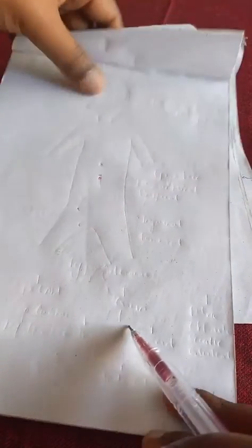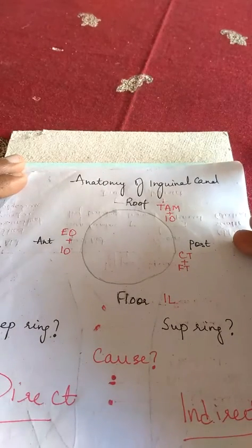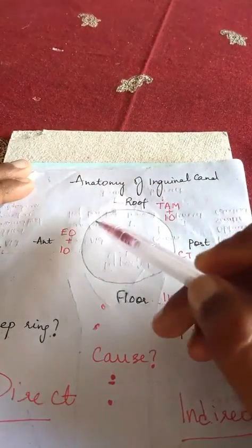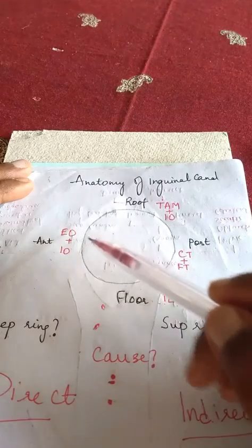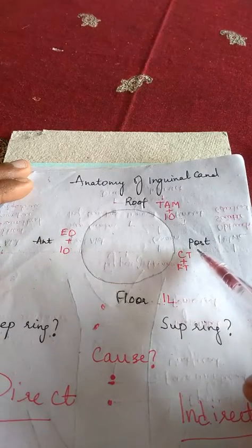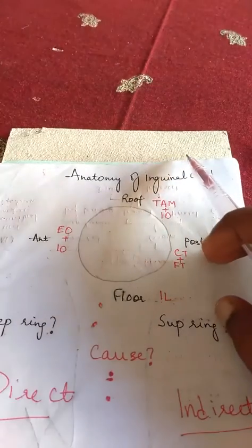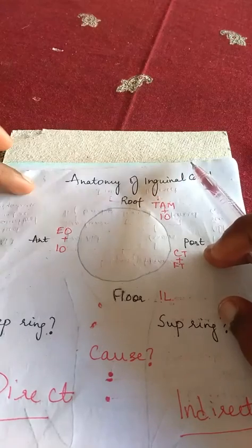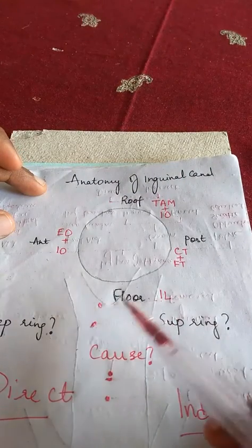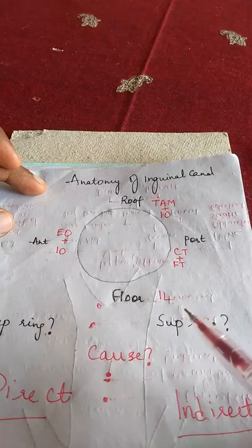Now let us discuss about the most common hernia, which is the inguinal hernia. In order to discuss that, we must first know the anatomy of the inguinal canal. The inguinal canal is formed anteriorly or superiorly by the aponeurosis of external oblique and internal oblique. Posteriorly, or the deeper aspect, is formed by the conjoined tendon and the fascia transversalis. The roof is formed by the transverse abdominis muscle along with internal oblique. The floor is formed by the inguinal ligament, which extends from the anterior superior iliac spine to the pubic tubercle.